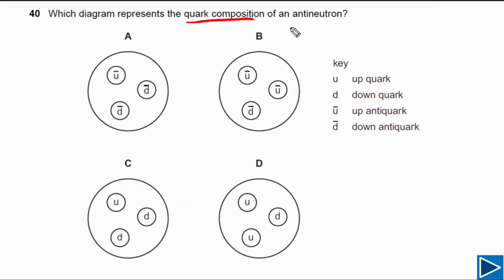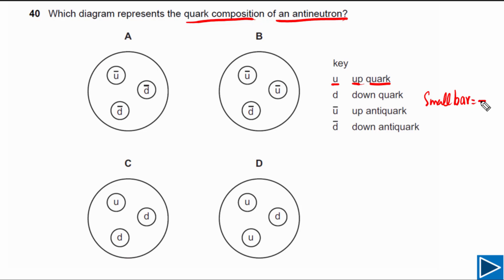For this question, we need to find the quark composition of an anti-neutron. The symbol small 'u' is for up quark, but if there is a small bar at the top, this means up anti-quark. Similarly, small 'd' is for down quark, and with a bar at the top, it becomes down anti-quark.